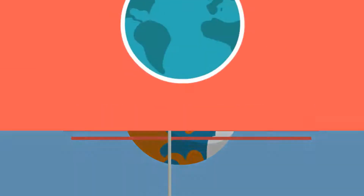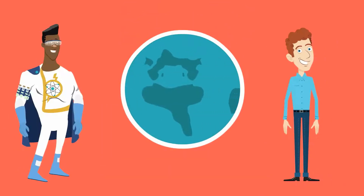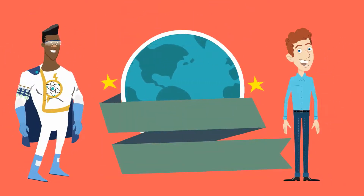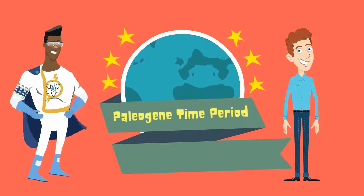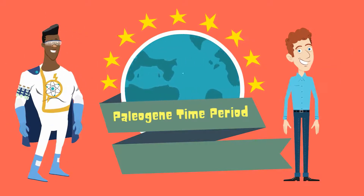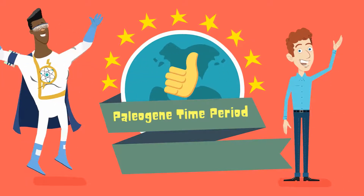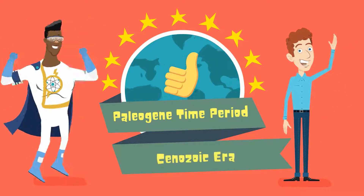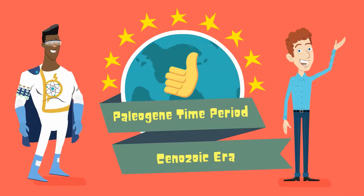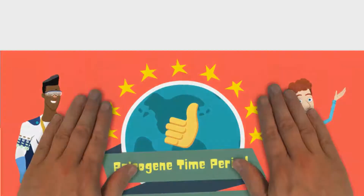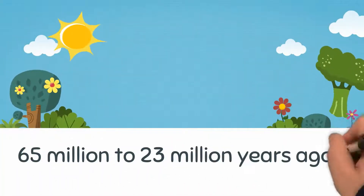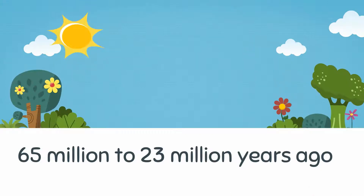Welcome to Moo Moo Math and Science. In this video I would like to talk about the Paleogene Time Period. The Paleogene Time Period is part of the Cenozoic Era. It lasted from 65 million to 23 million years ago. Let's hit some highlights.